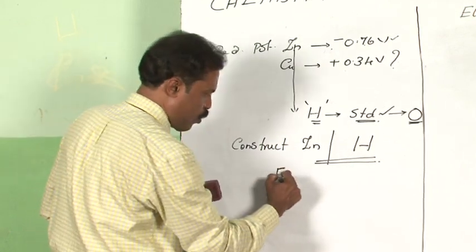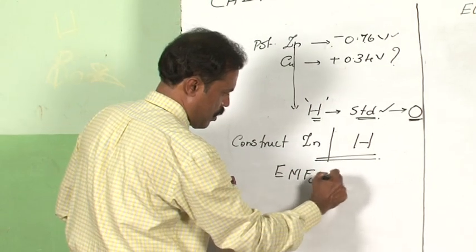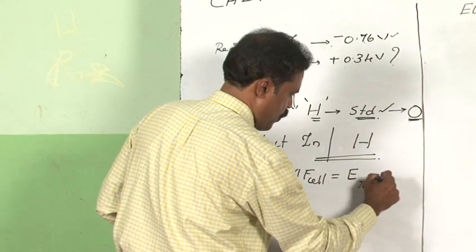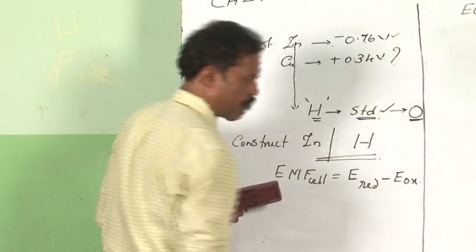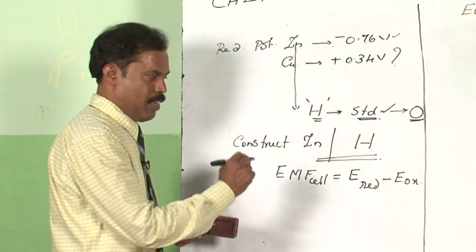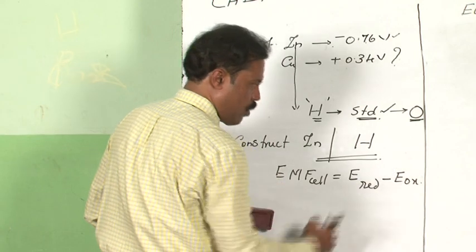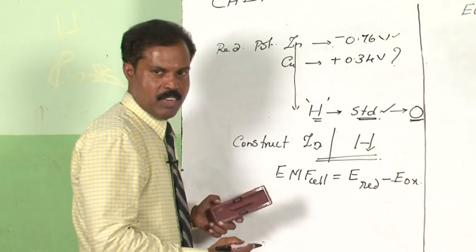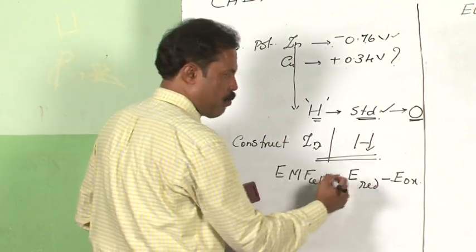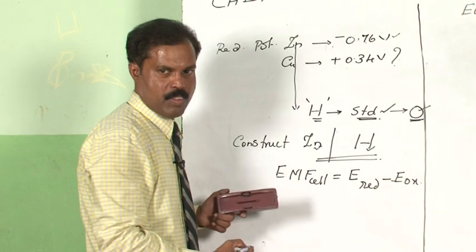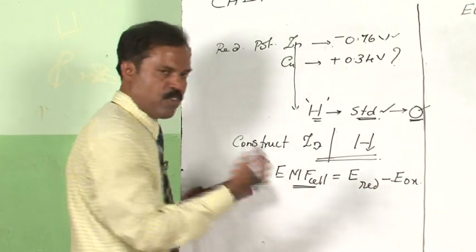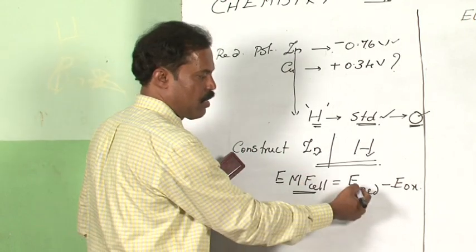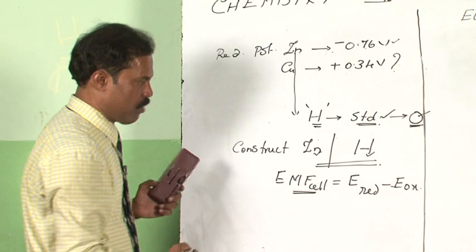Find out the EMF of the whole cell. The EMF of the cell must be the E of the reduction half minus the E of the oxidation half. Out of these two, one has to be zinc and one has to be hydrogen. The hydrogen part — the value is already assigned as 0. The EMF of the cell can be found out by constructing this cell, which gives you the reduction potential value of the metal.